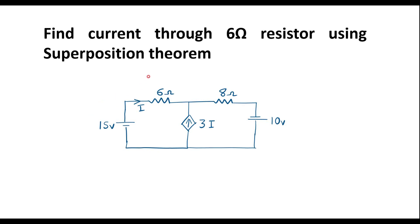In this video, I will consider one numerical on superposition theorem. Find current through 6 ohm resistor using superposition theorem. This is the given circuit. We need to calculate current through 6 ohm resistor, that is I, using superposition theorem.